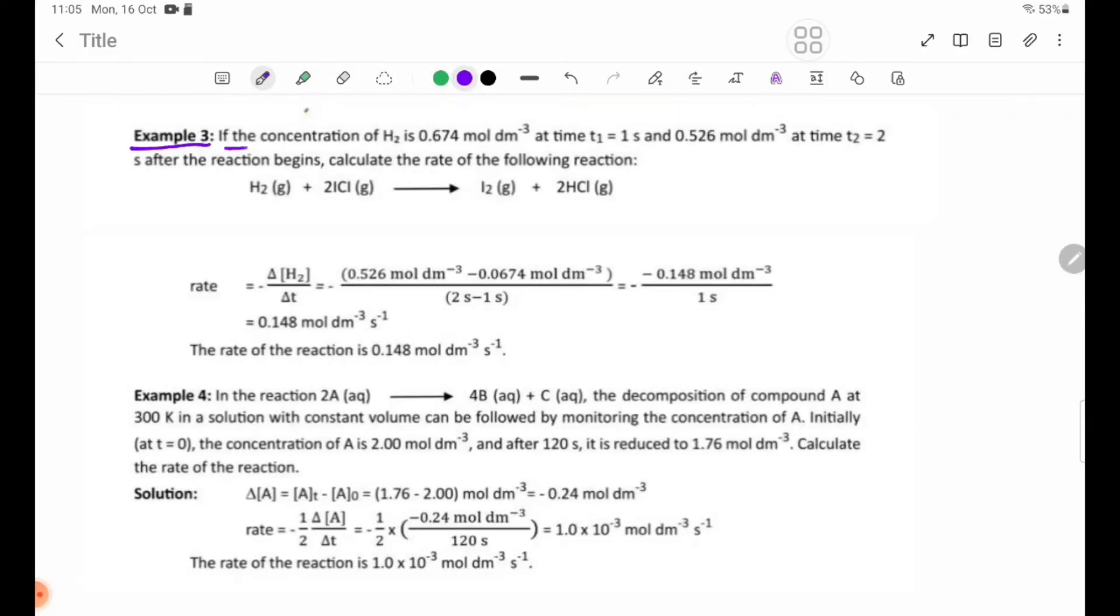Example 3: If the concentration of H2 is 0.674 mol/dm³ at time t1 = 1 second and 0.526 mol/dm³ at time t2 = 2 seconds after the reaction begins, calculate the rate of the following reaction.